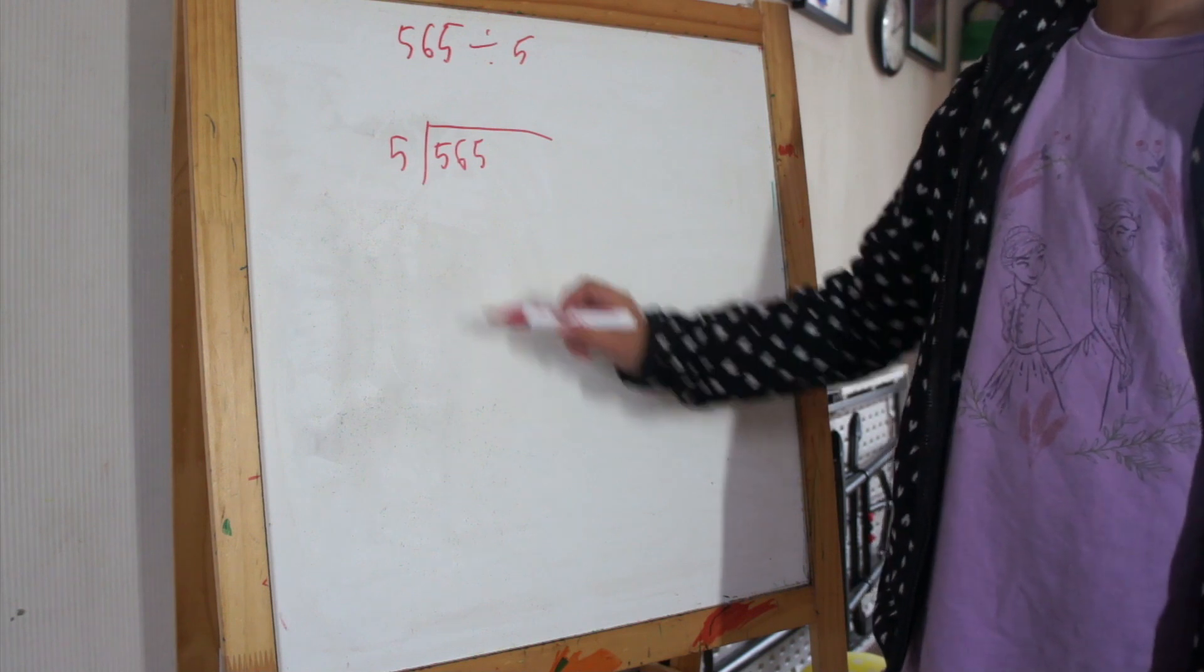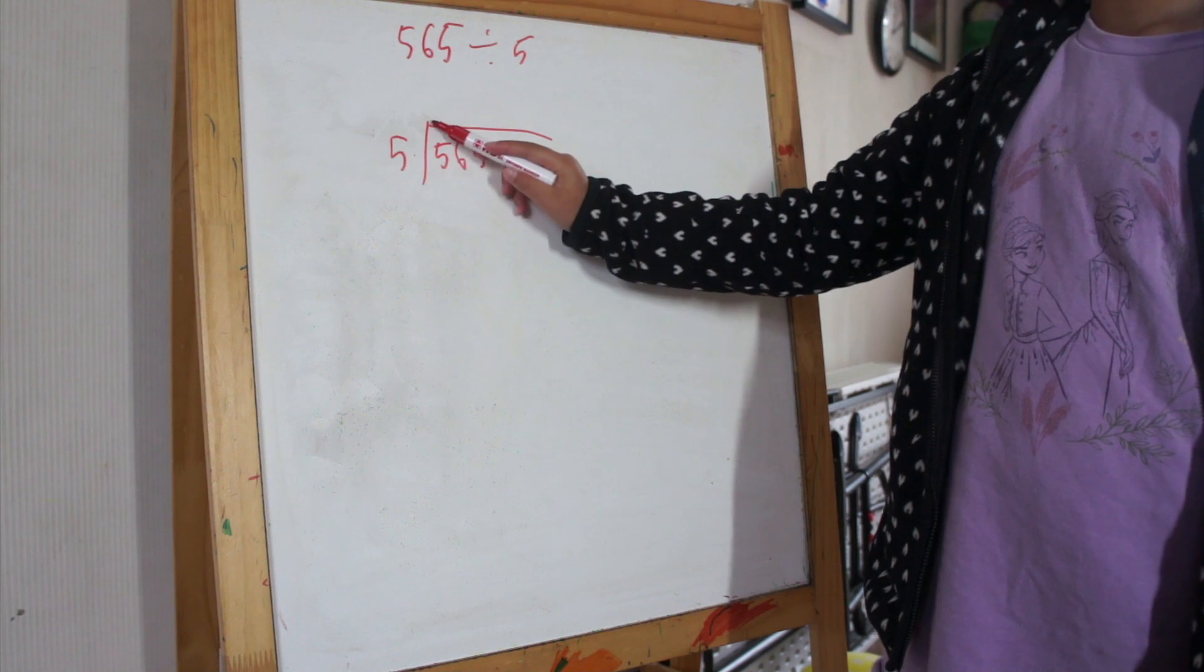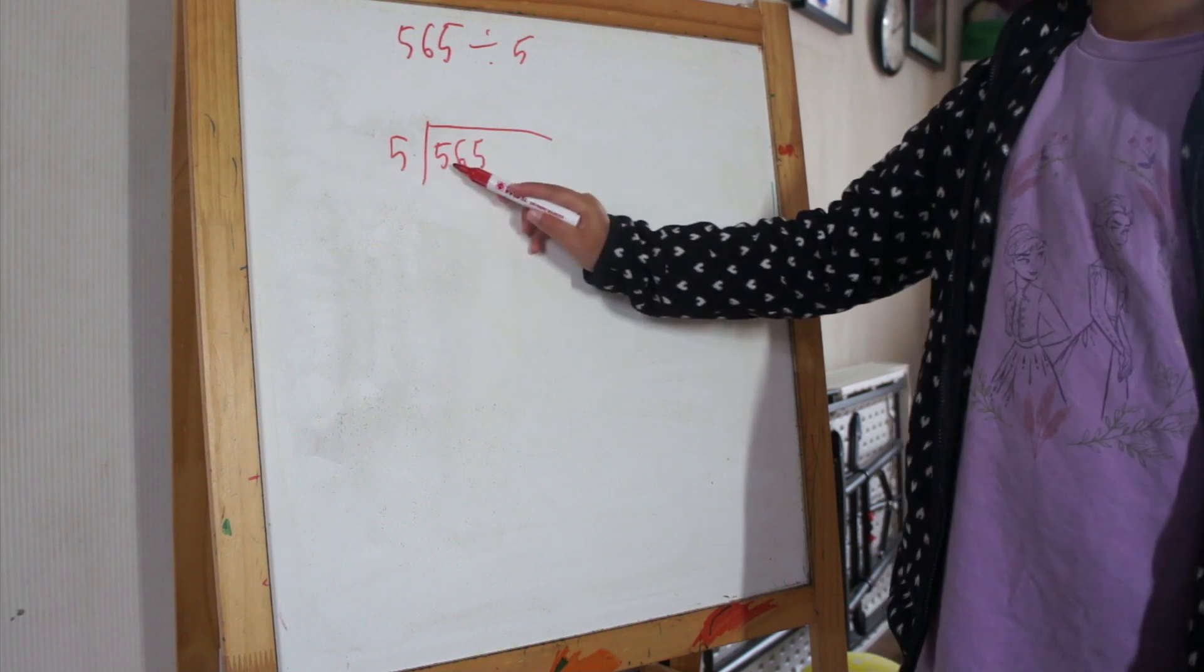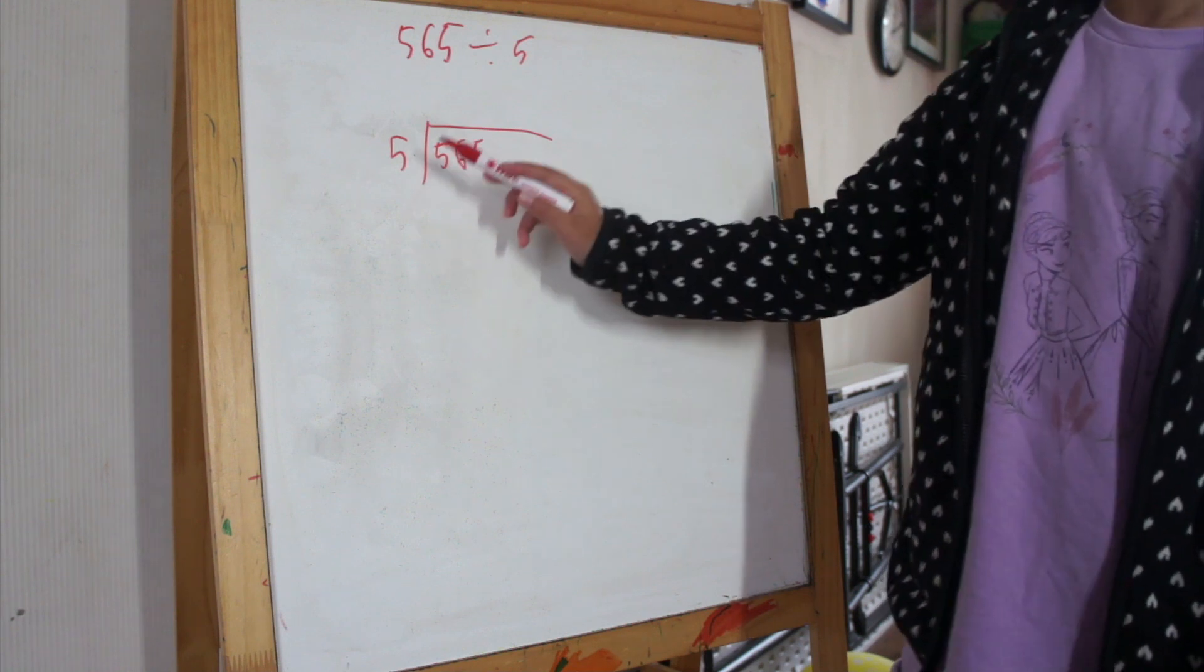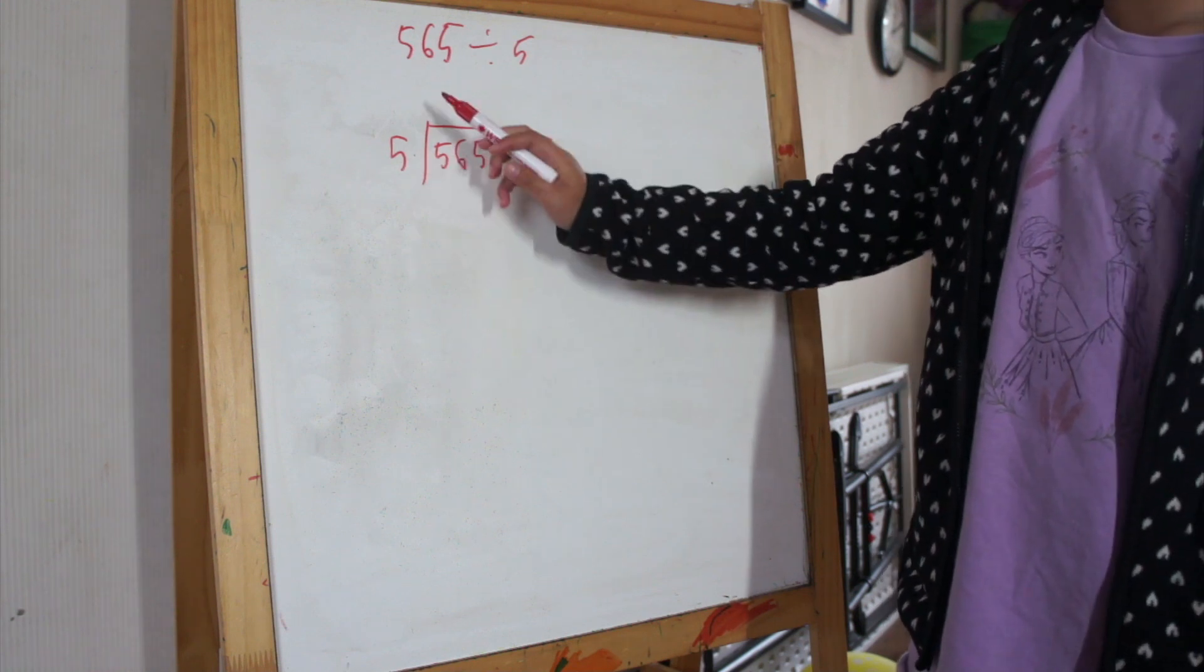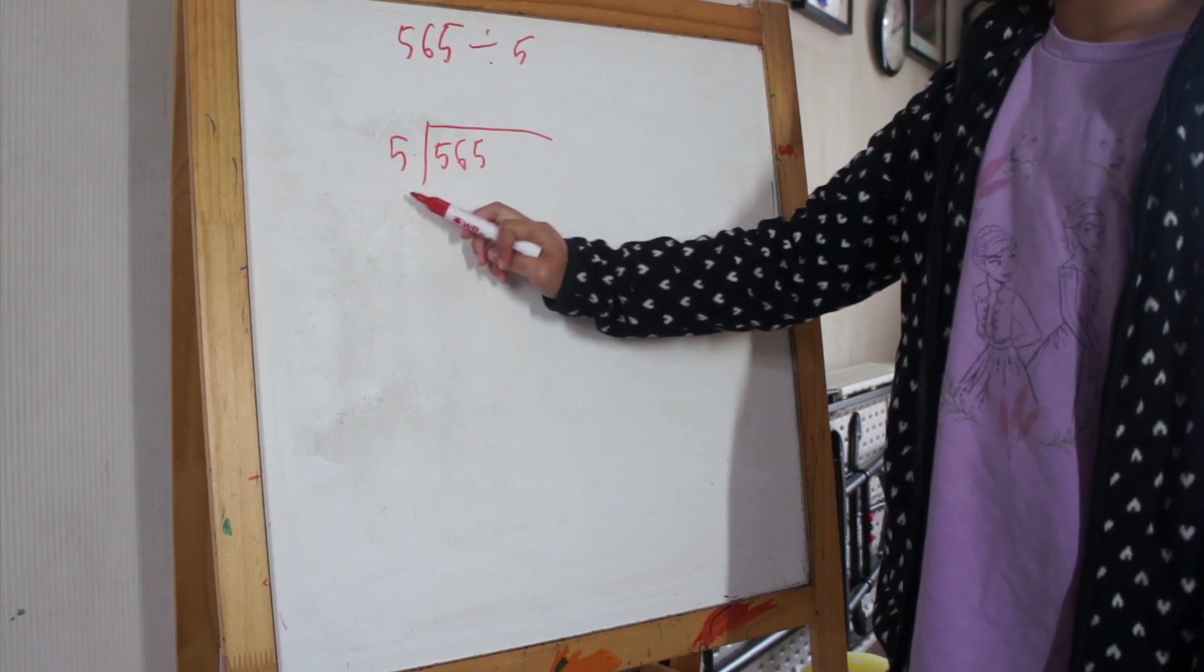First, you have to look at this 5 after this line, and then look at that one. You have to think: this times what equals that? 5 times 1 equals this.